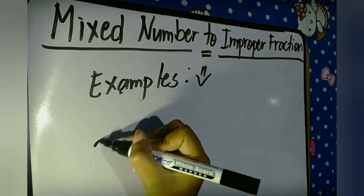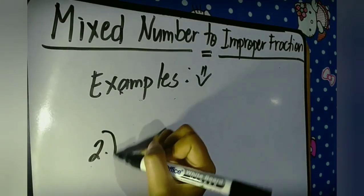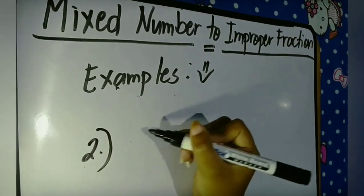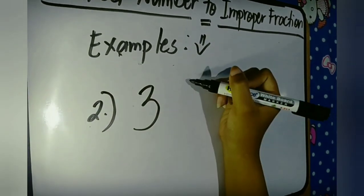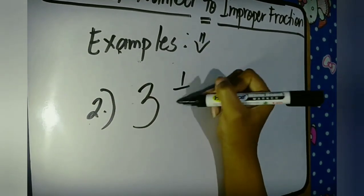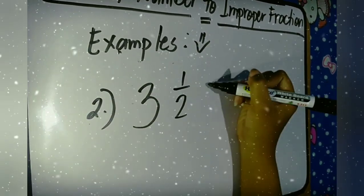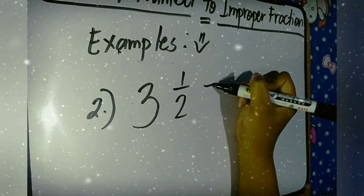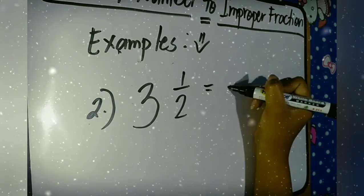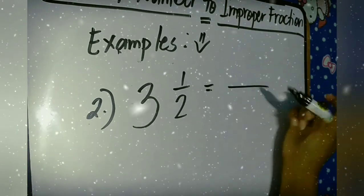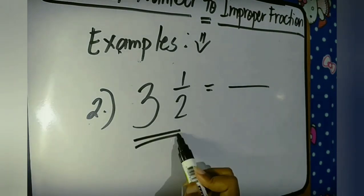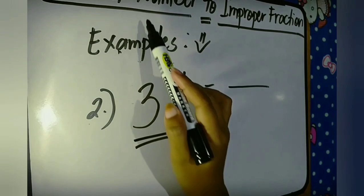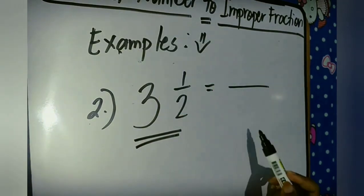Example number two is three and one half. Again, it is a mixed number and we're going to rewrite it into an improper fraction.